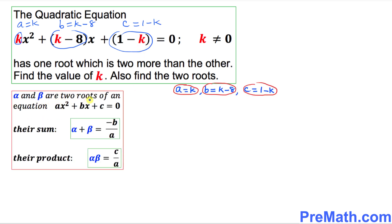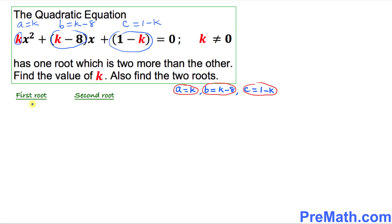Let's talk about the roots of a quadratic equation. If alpha and beta are two roots of a given quadratic equation ax² + bx + c = 0, then their sum is always equal to −b/a, and their product is equal to c/a. These facts can help us a lot.